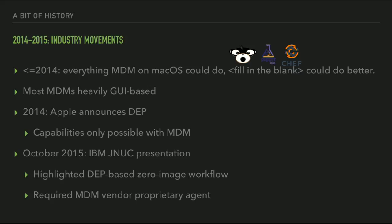MDM has worked on macOS since around 10.7. But back then, everything that MDM on macOS could do, just about any other tool would do way better — and for a lot of things, that's still the case. Munki can install software better than MDM. Puppet and Chef manage things far better, including pushing profiles to machines. So no one really had a good reason to use MDM on macOS.